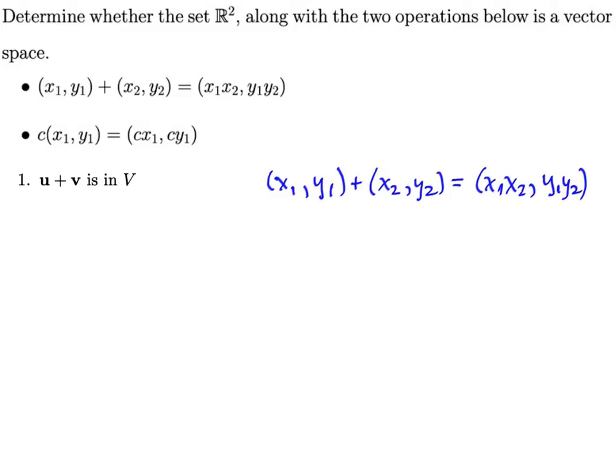And since the components were real numbers, when we multiply them, x₁ times x₂ is a real number, and y₁ times y₂ is a real number. So this is an ordered pair. This is a vector in R². So yes, the set is closed under this addition operation. Good.